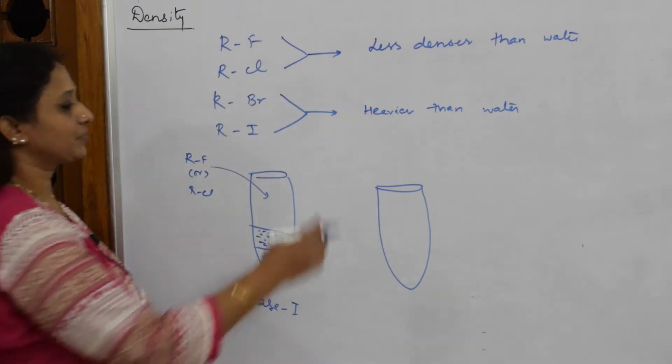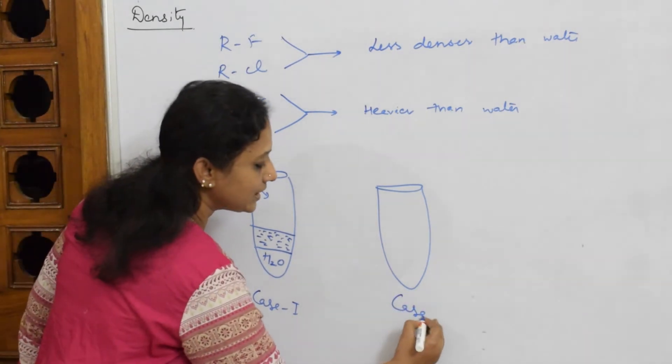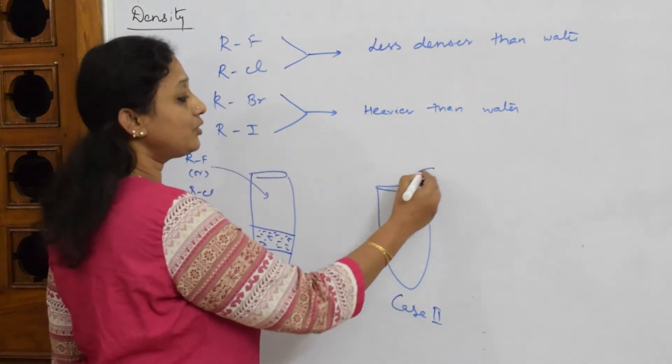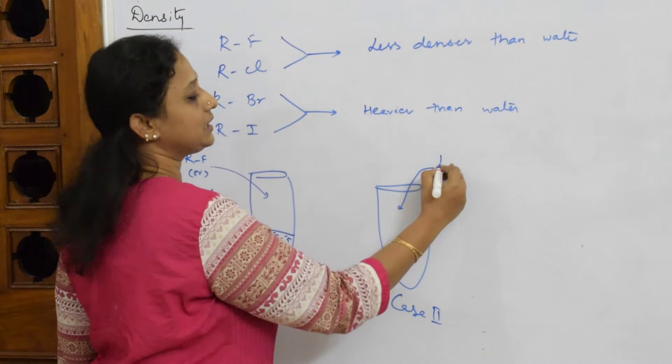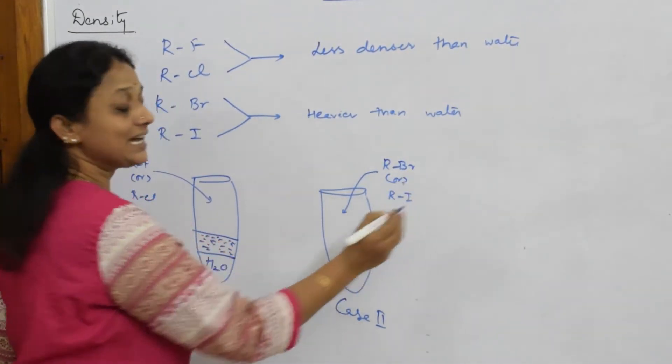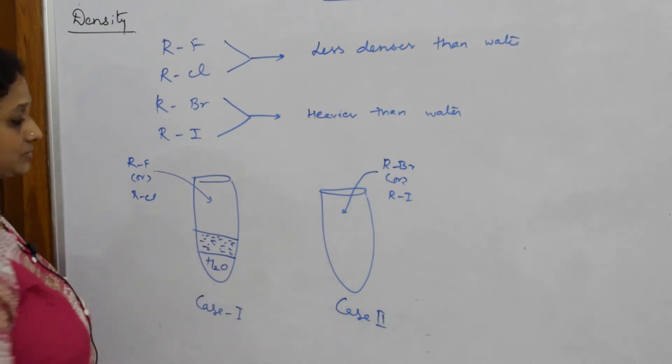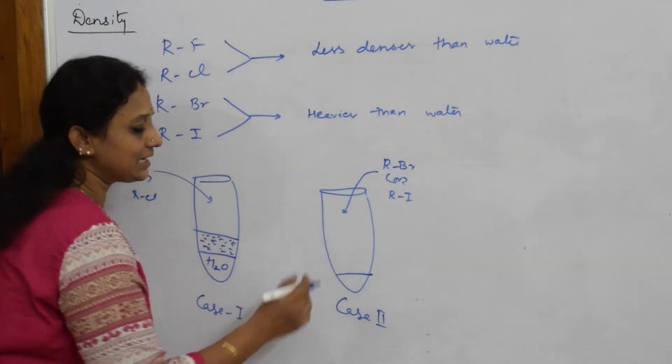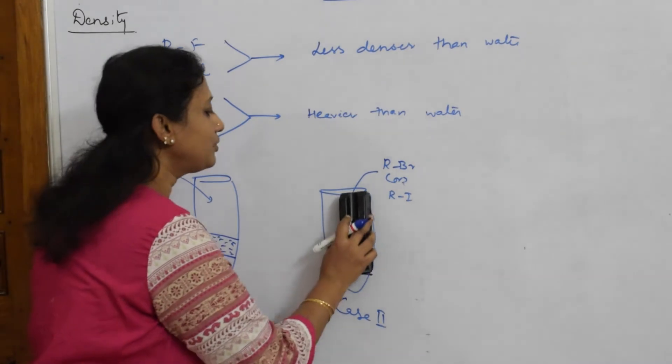When I take case two, I'm going to dissolve either R-Br or R-I. I said they are heavier than water, so they're going to occupy the base layer.